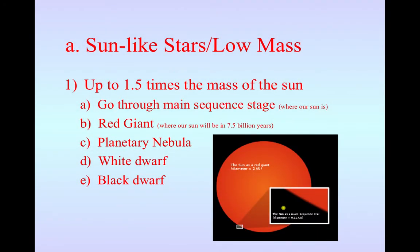Okay, so now we'll get this into our notes. So our sun-like stars, we'll consider them low mass. They're going to be up to 1.5 times the mass of the sun. They go through the main sequence stage. This is where our sun is right now. They then turn into a red giant. When they turn into a red giant, if you look at this picture down here, here's our main sequence stage. When they turn into a red giant, look what happens to the size of the star. It increases dramatically when it goes into the red giant phase.